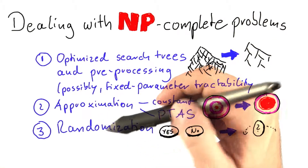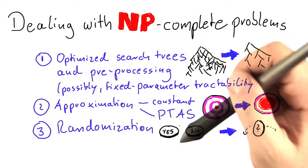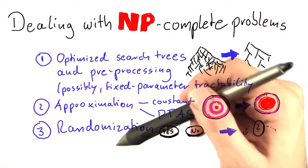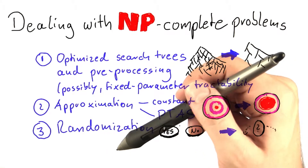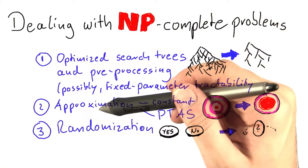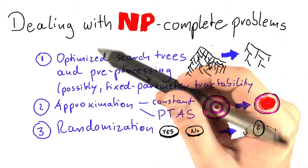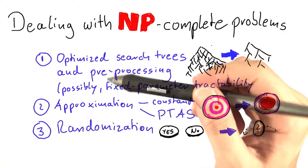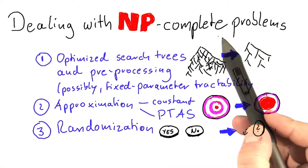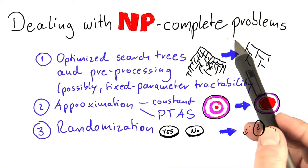Be warned though: just because some algorithms don't have any provable performance guarantees doesn't necessarily mean that they are simpler or easy. Rather, successful implementations of any technique for an NP-complete problem require a lot of thought. The general rule is that finding good solutions to hard problems requires a lot of thought, no matter what technique you're using.